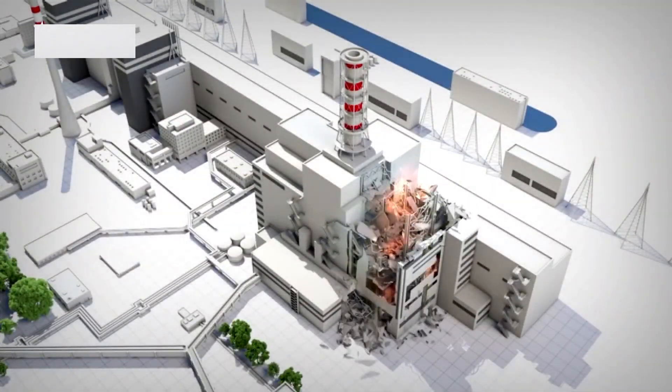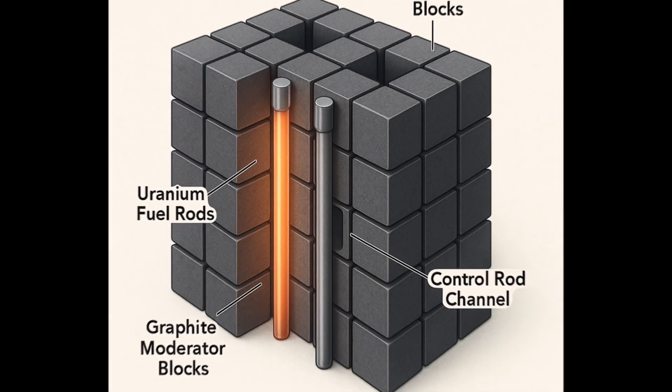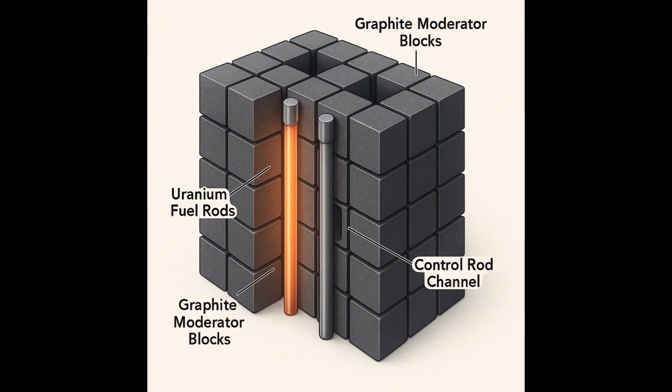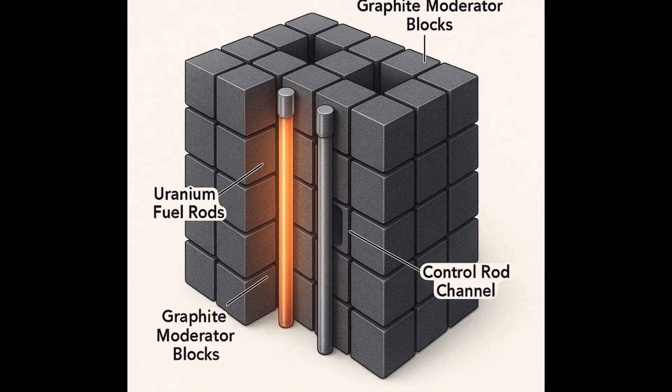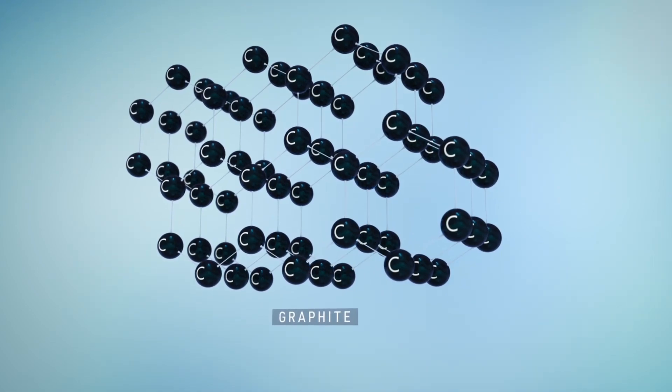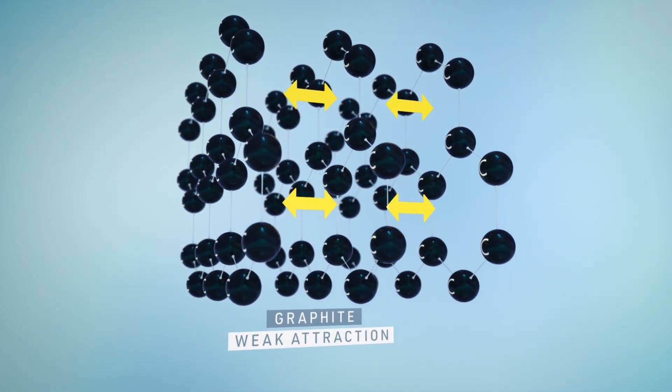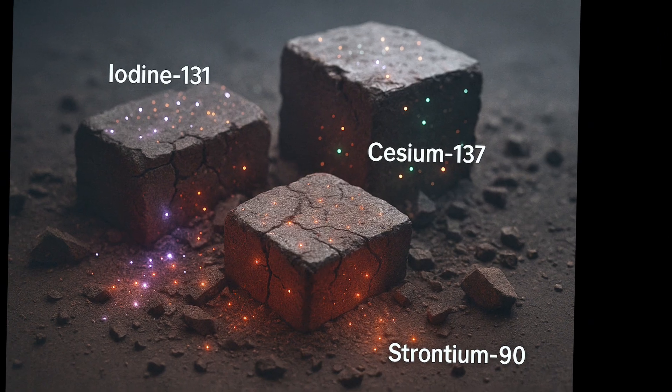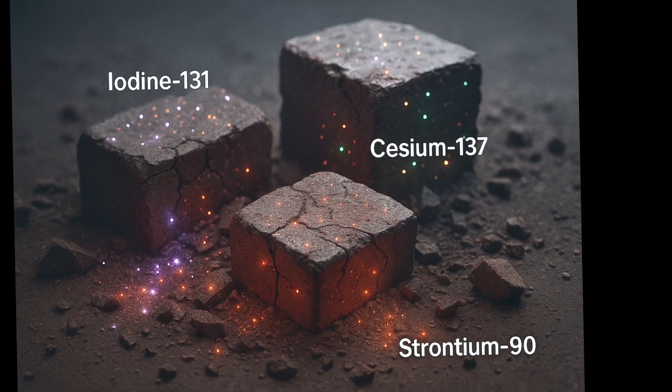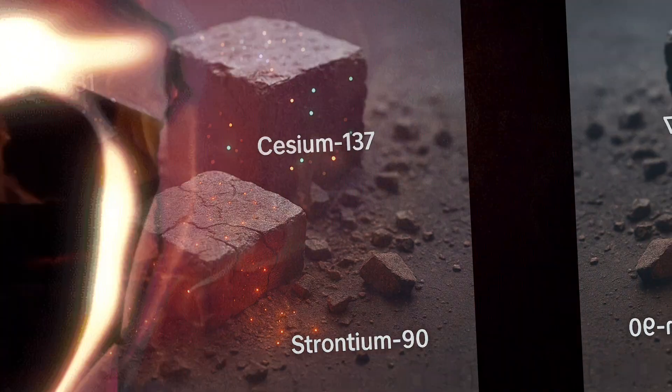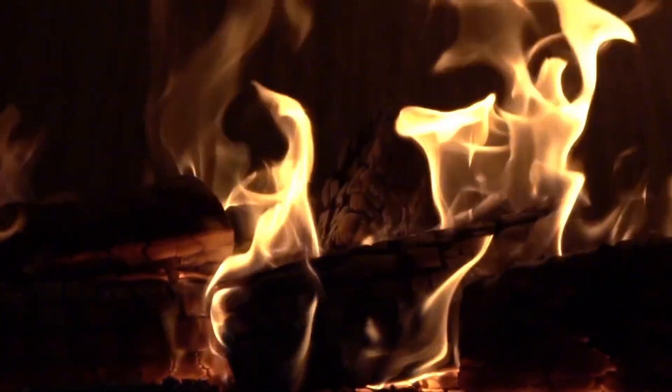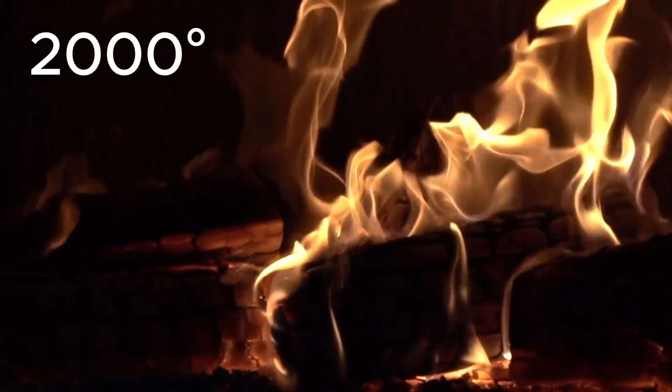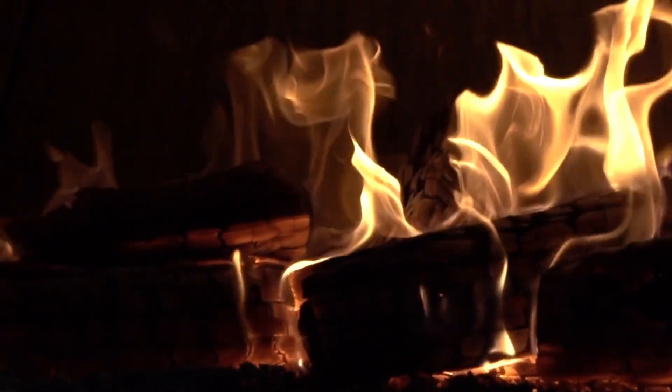When the reactor exploded, uranium fuel rods shattered and scattered radioactive debris across the site. Among them were the graphite blocks, the very ones we used inside the reactor to slow down neutrons and control the chain reaction. Graphite itself isn't radioactive, but the explosion changed that. The graphite became coated with radioactive fission products: iodine, cesium, strontium, the deadly byproducts of nuclear fuel. Then the fire started. The heat was unimaginable, over 2,000 degrees. And graphite, under those conditions, burns like coal.